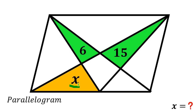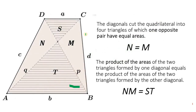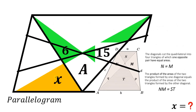To answer this question we will use two key concepts. Let's call the middle region area 'a', so we have two unknown variables. Concept one: a diagonal cuts a quadrilateral into four triangles, of which one opposite pair have equal areas — so n is equivalent to m. Concept two: the product of the areas of two triangles formed by one diagonal equals the product of the areas formed by the other diagonal — so n times m equals s times t.